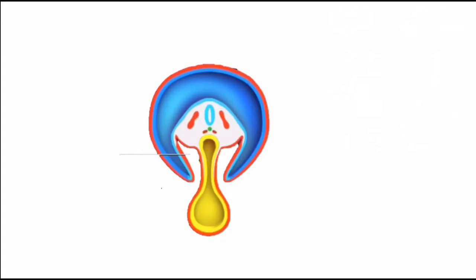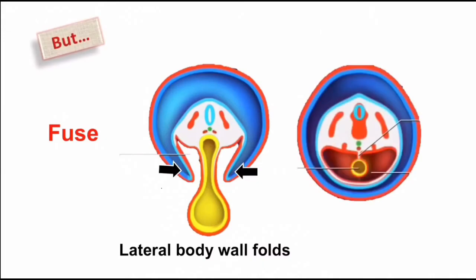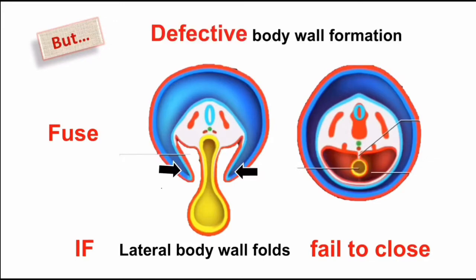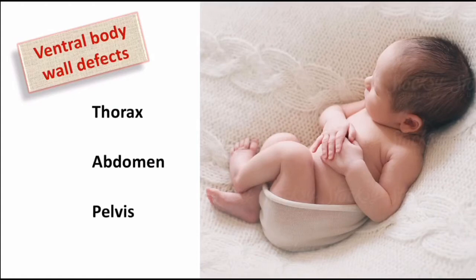This is the cross section of an embryo undergoing lateral folding. The structures shown by the arrows are lateral body wall folds, which will fuse at the midline at the end of the fourth week. If the lateral body wall folds fail to close in the midline, body wall formation might be defective — this is termed a ventral body wall defect. This defect can occur in the thoracic region, abdominal region, and in the pelvis, as shown by the demarcation in the picture.